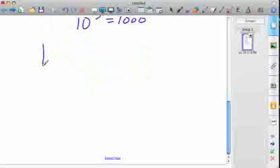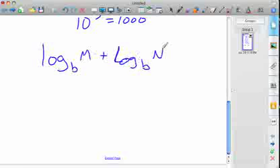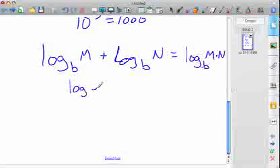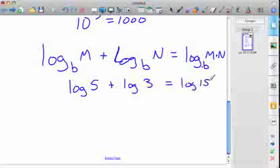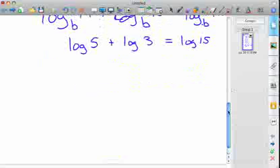Number two thing you need to know is that anytime you add logarithms, you multiply that number inside. So M times N. So if you had the common logarithm of 5 plus the common logarithm of 3, that would be the common logarithm of 15. If you think about it, the exponent rules, when you multiply exponents, you add the exponents. So it comes from the same thing.